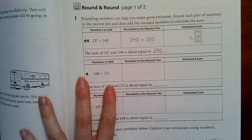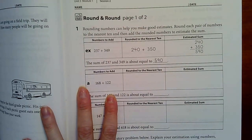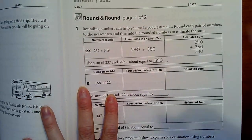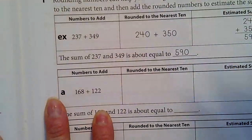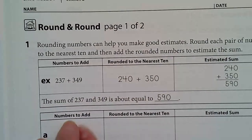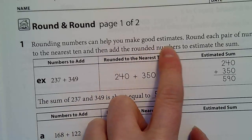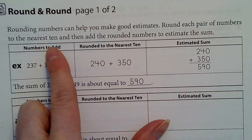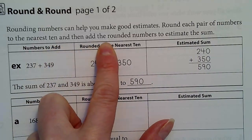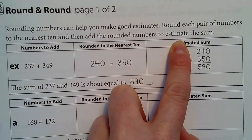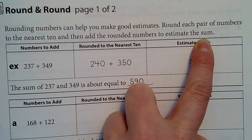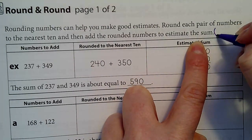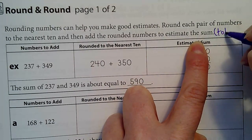Today we're adding numbers, but we are rounding before we add. Let's look at the instructions. Rounding numbers can help you make good estimates. Round each pair of numbers to the nearest ten and then add the rounded numbers to estimate the sum or the total. We know that the word sum is the total.